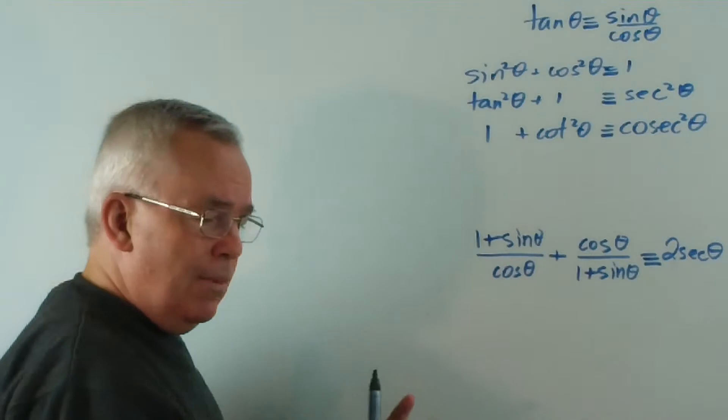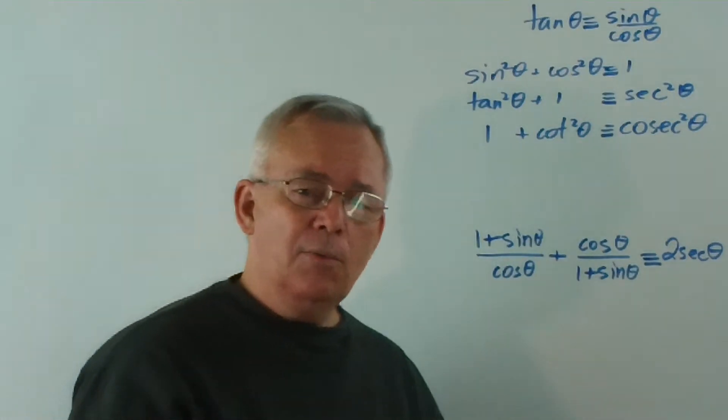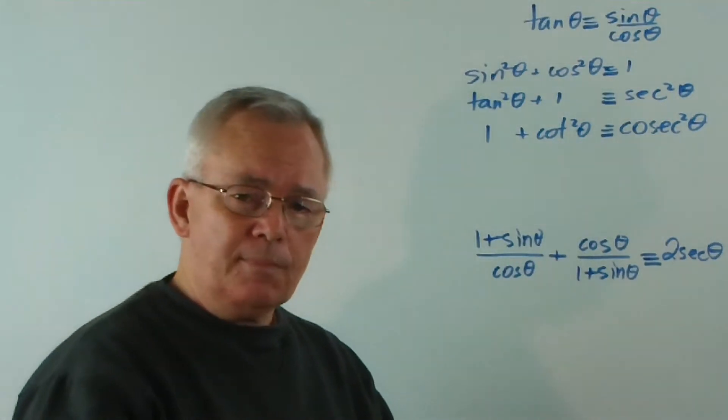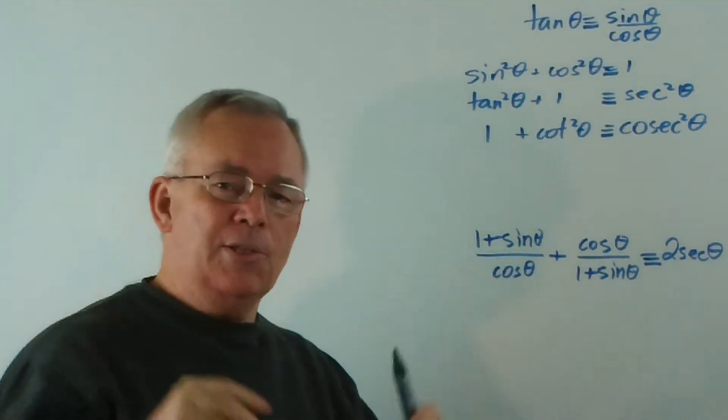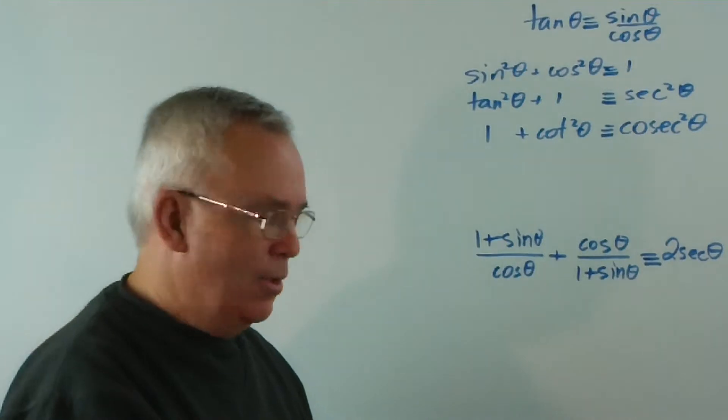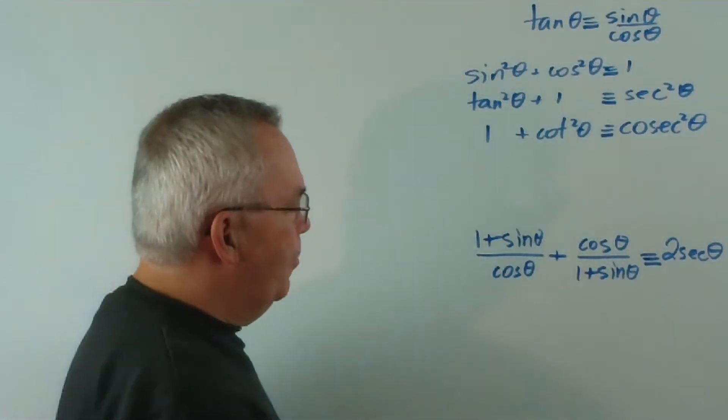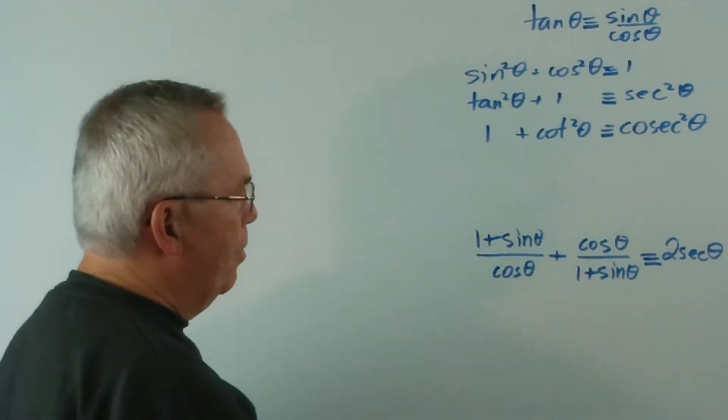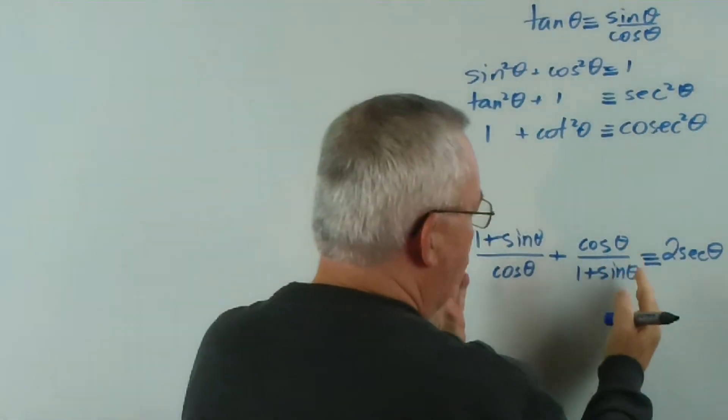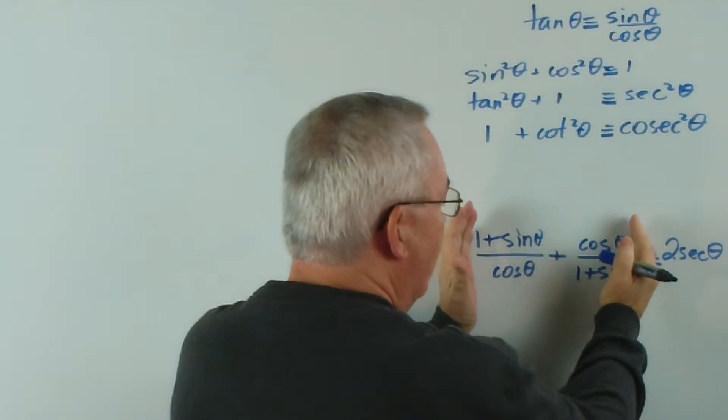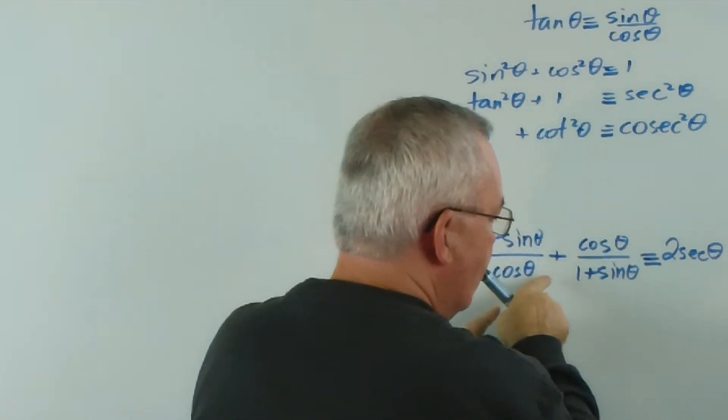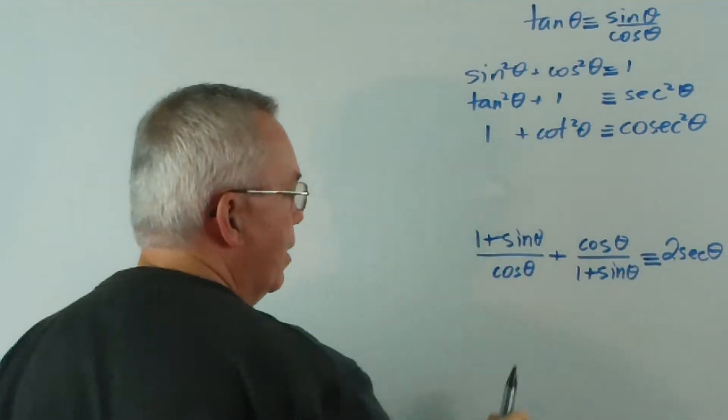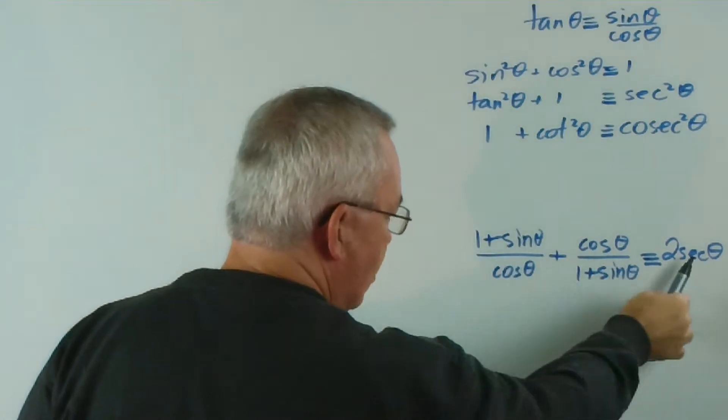So this is what we've got to solve. And normally, as I expressed in the last video, we try to simplify. Simplifying is something mathematicians work hard at. We do not try to complexify. So we look for the most complicated side of the equation or the identity, which is obviously this one. And that means we would prefer to start here and demonstrate that this is true. We can simplify this to make that.